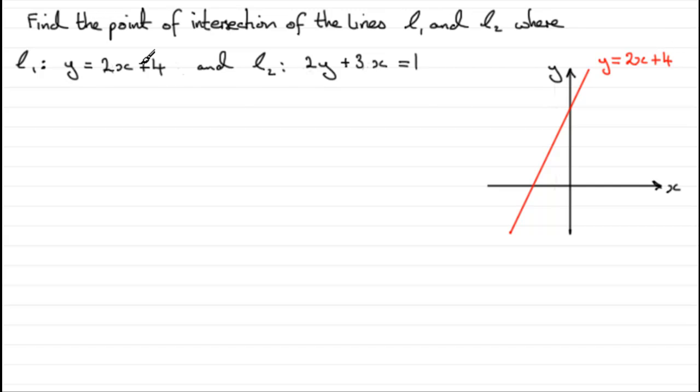It's in the form y equals mx plus c, so we know it crosses the y-axis when x is 0, making y equal 4. So we can write this point in here as 4. Let's just mark that in there.